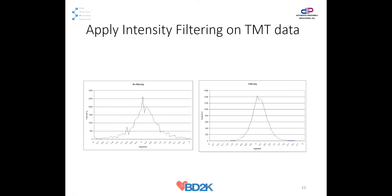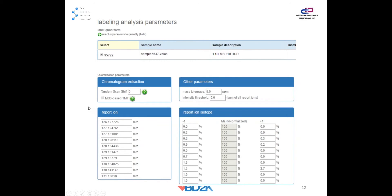This data is relatively old, but we just analyzed the Fusion data. For TMT or iTRAQ, you can do MS3-based analysis using this template. You can specify all reporter ion masses — this is the default for the template — and also perform purity correction, specify mass tolerance in PPM, and set an intensity threshold.